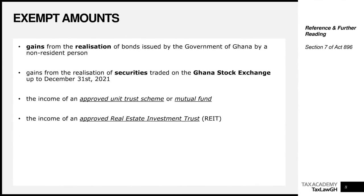The next is gains that a non-resident person makes from the realization of bonds issued by the Government of Ghana. For a financial instrument, there are typically two cash flow streams: periodic returns such as interest or dividends, and capital gains when you sell the instrument above its purchase price. If you bought a bond at $100 and it has appreciated to $200, you've made a capital gain of $100. Such gains made by non-residents from realizing Government of Ghana bonds are exempt from income tax.